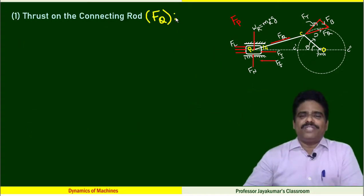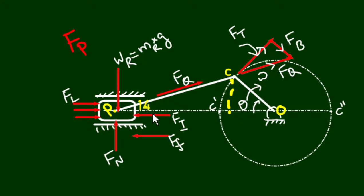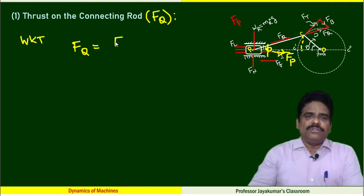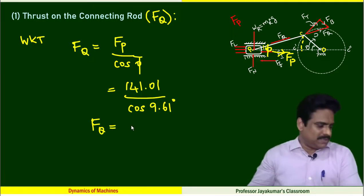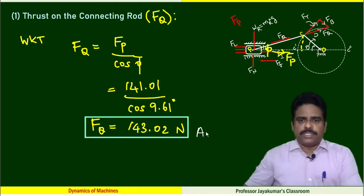The first answer we are looking forward is to determine thrust along the connecting rod, FQ. See the diagram here, this force diagram. I know φ, I know FP. This is FP. Using this trigonometry, we can easily find FQ value. We know that FQ equals FP/cos φ. On substitution and simplification, I get FQ as 143.02 Newton. This is one answer.